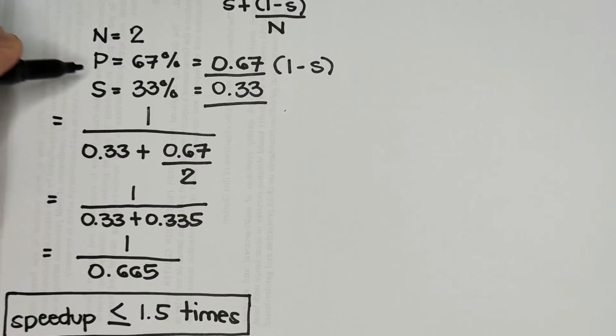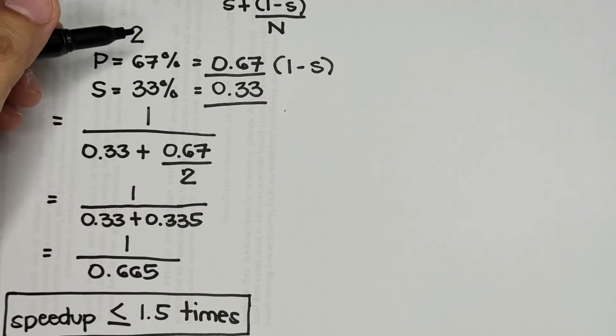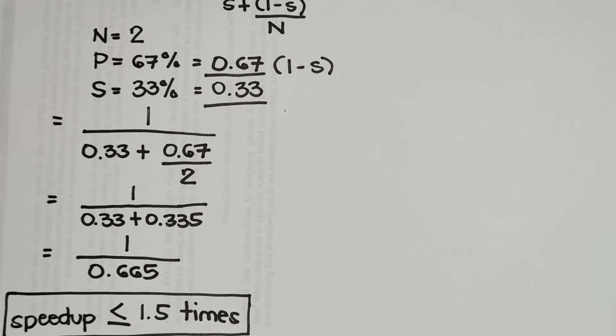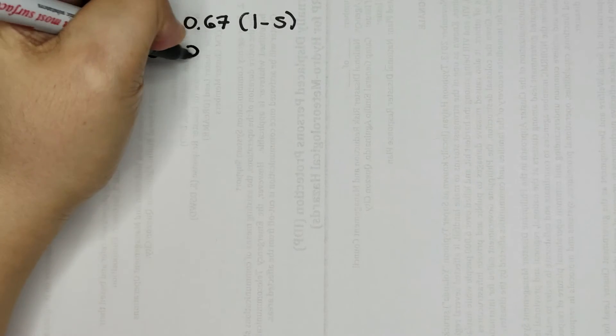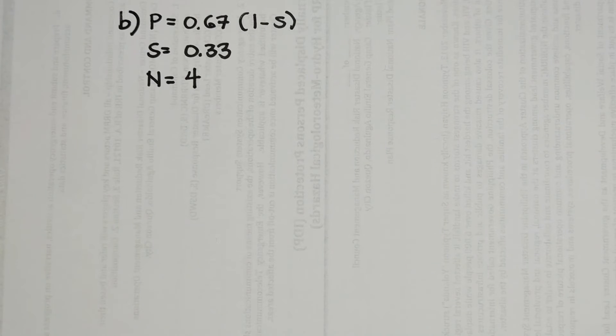It also depends on how large the parallel operations are compared to serial operations. For letter B, the given values are the same: P equals 0.67 (which is 1 minus S) and S equals 0.33. But our processing core for letter B is 4.